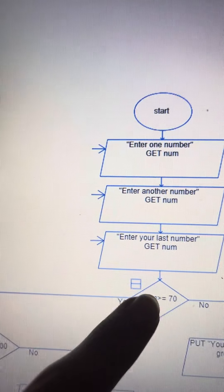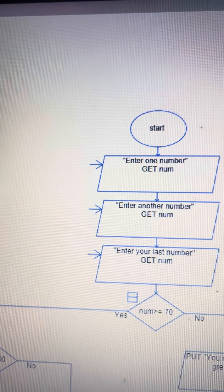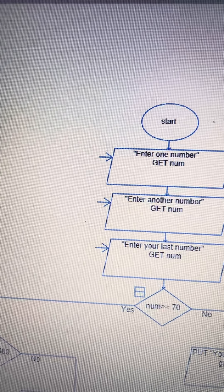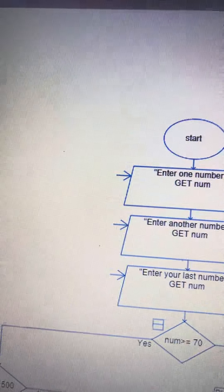I also have the number greater than or equal to 70, so that if the number isn't equal to 70, it's at least greater than 70.